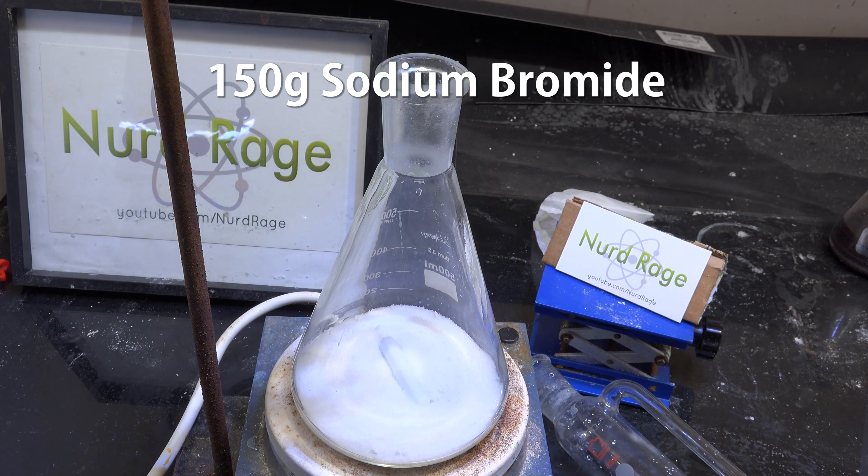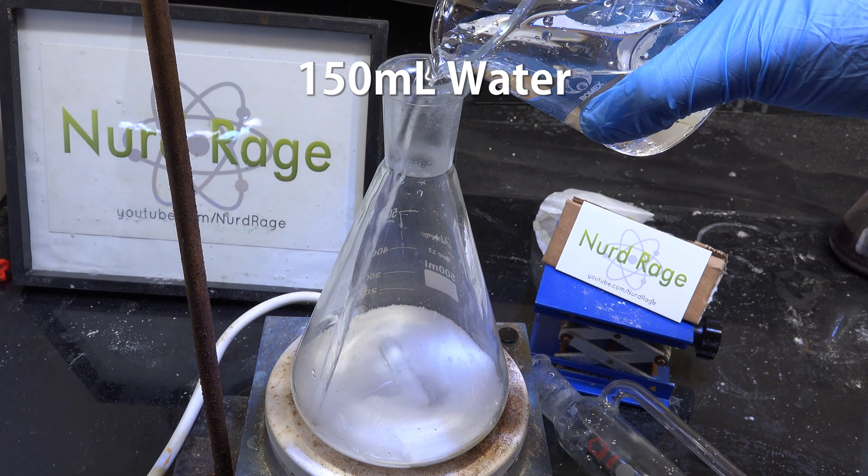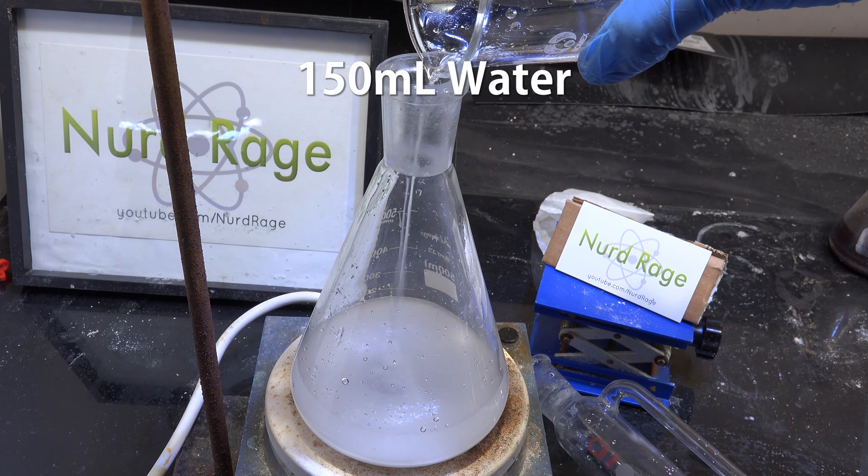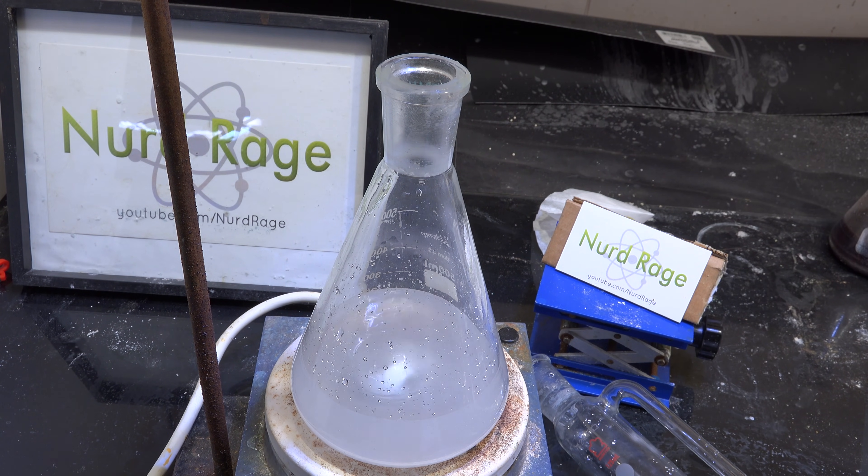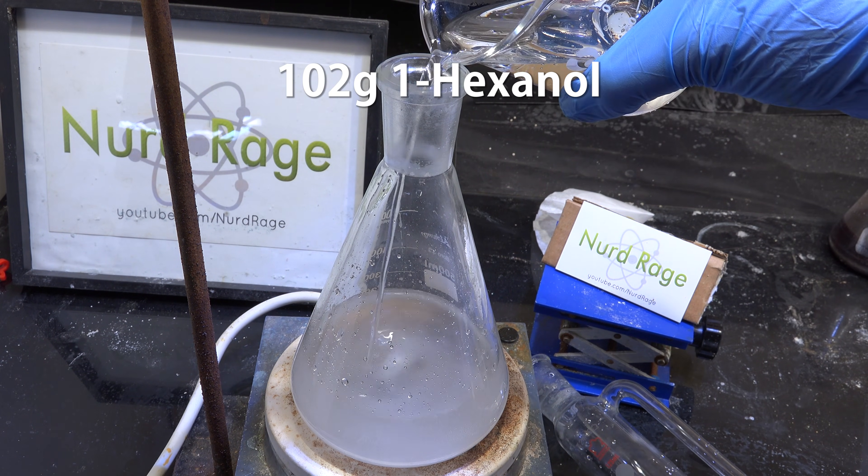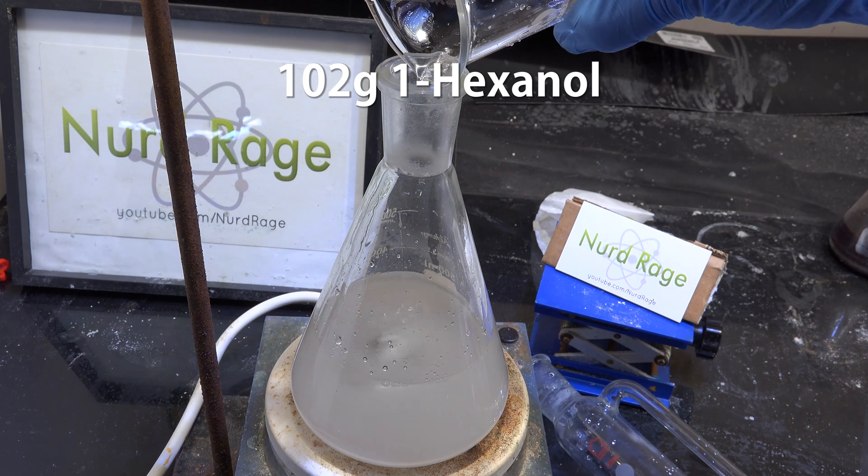First we get 150g of sodium bromide. This will be our bromide source rather than hydrobromic acid. Then we add in 150 mL of water and stir until most of it is dissolved. Depending on temperature it may not completely dissolve but this is acceptable. Now we add in 102g of 1-hexanol. This is the alcohol we'll be converting into an alkyl halide.